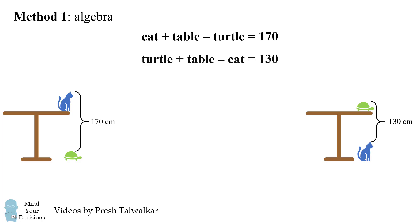There's a neat little trick we can do. We can add these two equations together. The variables of cat and turtle will then cancel out. So we have 2 times table is equal to 170 plus 130, which is 300, and therefore table is equal to 150. So the height of the table is 150 centimeters.